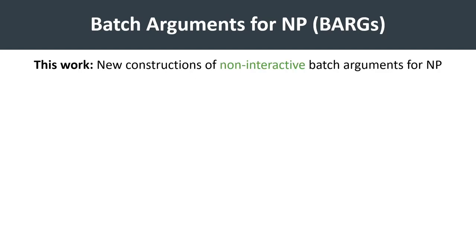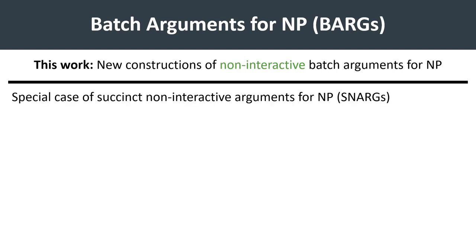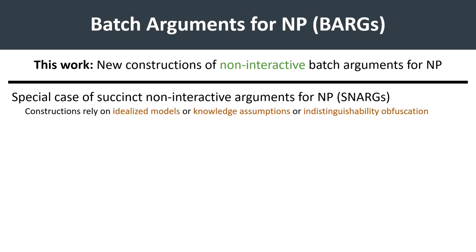In this work, we focus on constructing new non-interactive batch arguments for NP. Batch arguments are a special case of succinct arguments or SNARKs, and indeed any SNARK for NP automatically gives a batch argument for NP. However, existing SNARK constructions either rely on idealized models, non-falsifiable knowledge assumptions, or on powerful cryptographic tools like indistinguishability obfuscation.